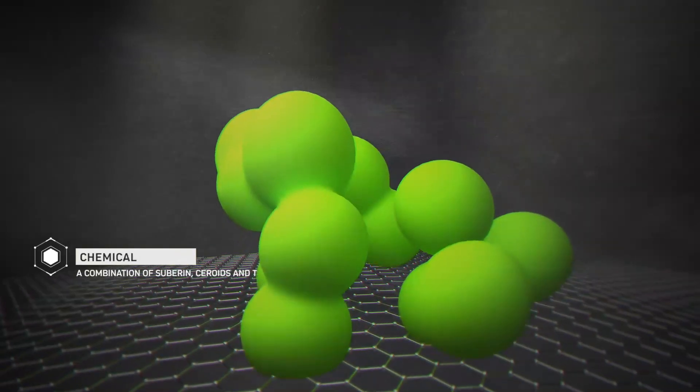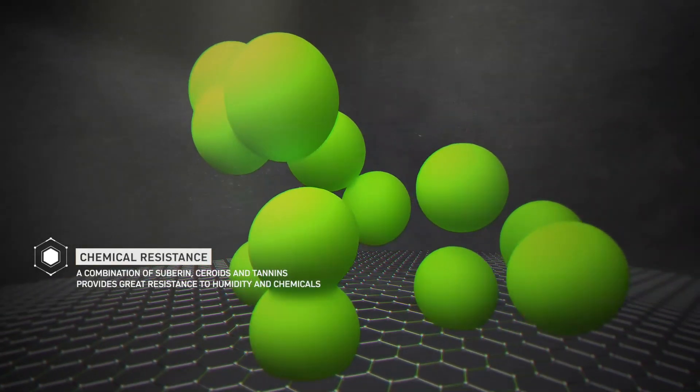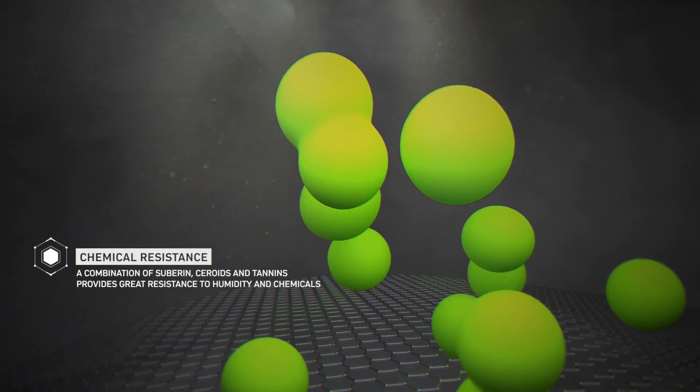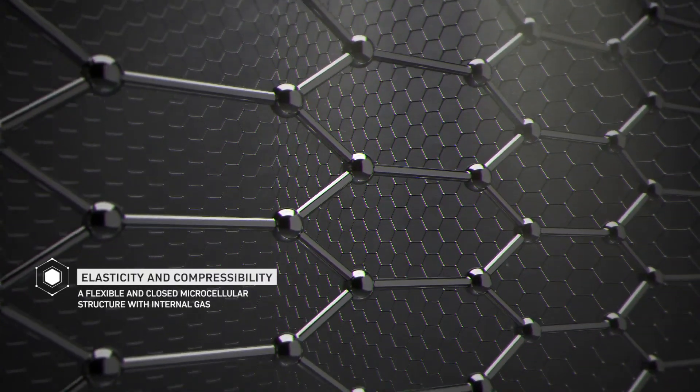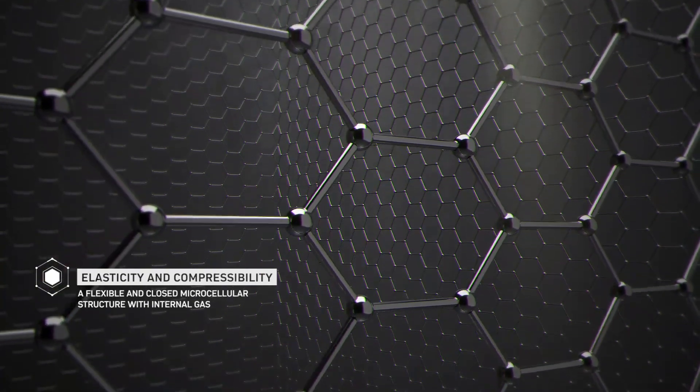Chemical resistance: a combination of suberins, steroids and tannins provides great resistance to humidity and chemicals. Elasticity and compressibility: a flexible and closed microcellular structure with internal gas.